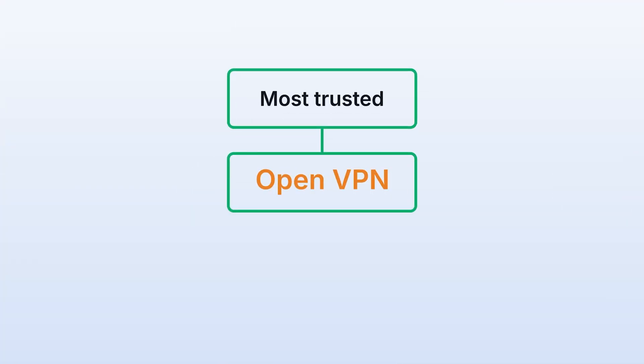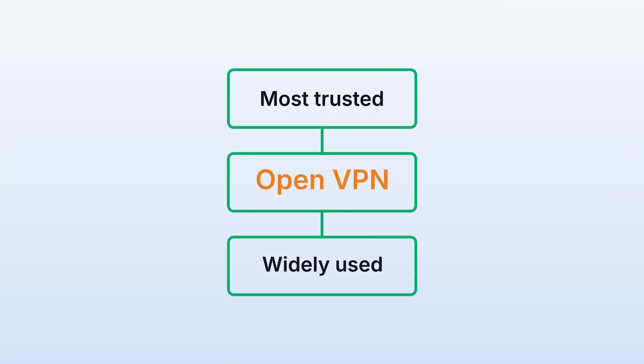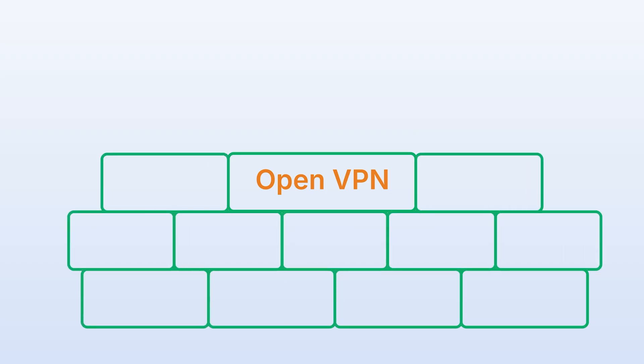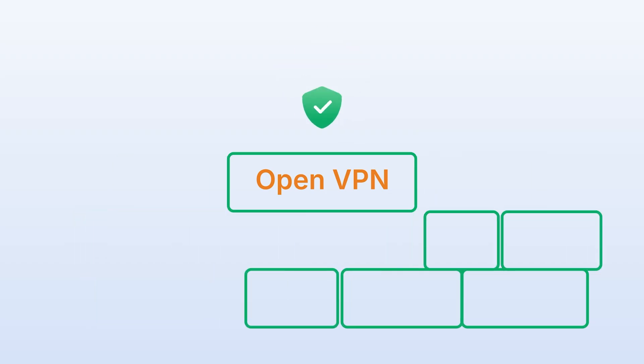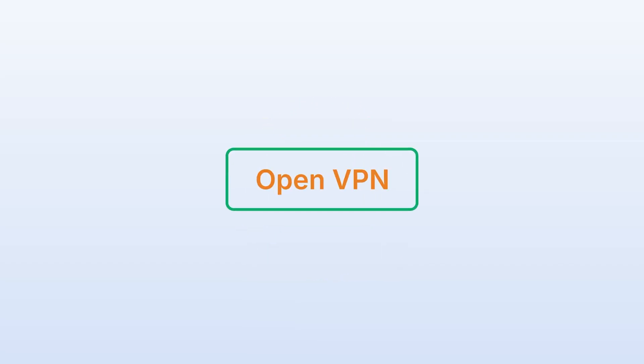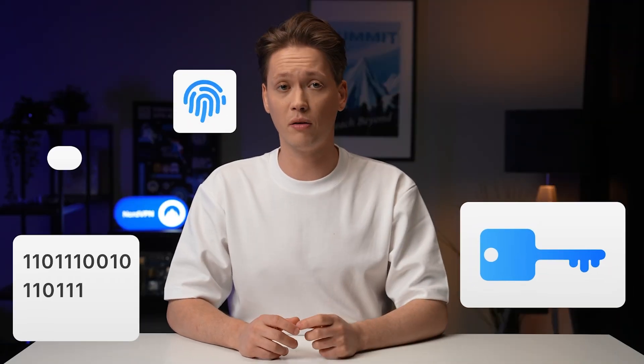First on the menu is OpenVPN. It's one of the most trusted and widely used open source VPN protocols. This long-established protocol has a robust security foundation, is flexible and easily adaptable to various network environments. It also supports numerous cryptographic algorithms, which made it wildly popular, especially for commercial VPN services.